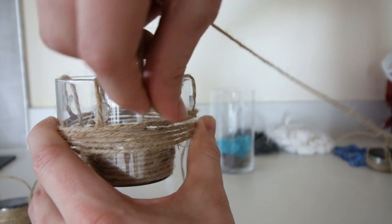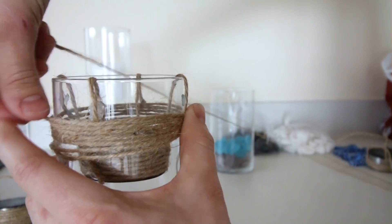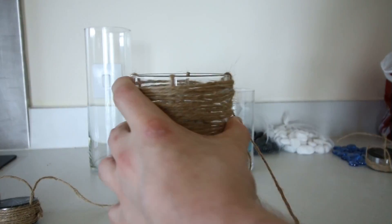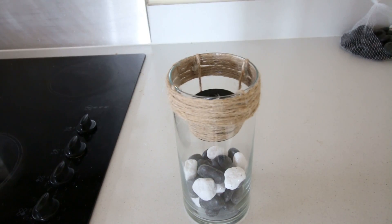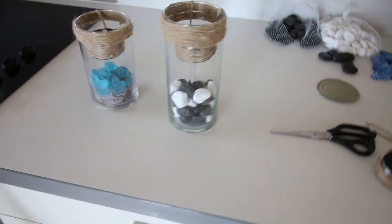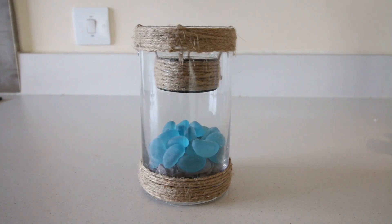I then wrapped a longer length of string around the upper rim of the candle holder, in the exact same way as I did with the solar panel. I still had quite a bit of rope left over, so I decided to wrap some around the bottom as well.